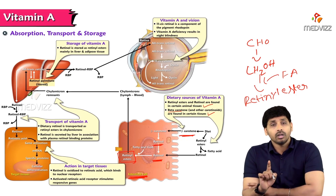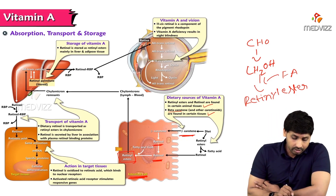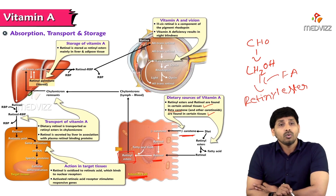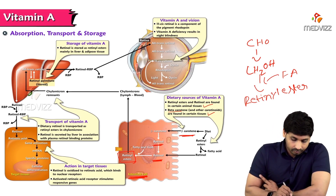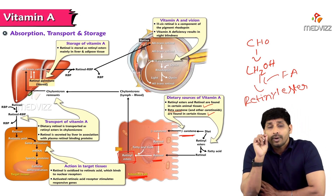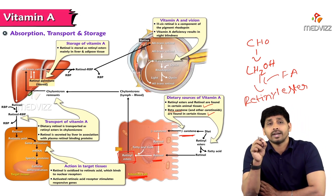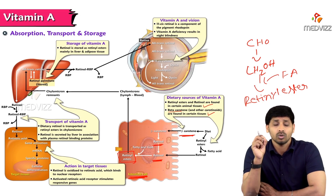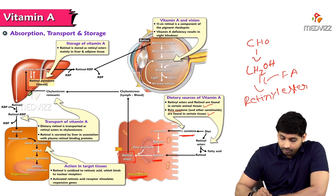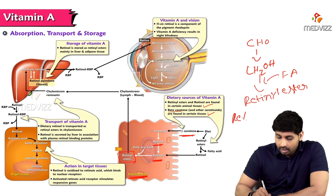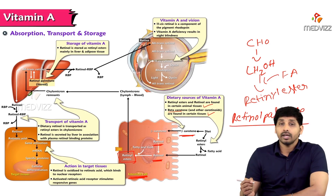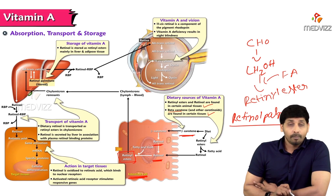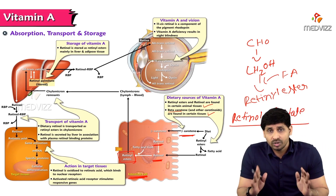In the liver, retinol esters are stored. The fatty acid mainly attached to retinol is palmitic acid, so vitamin A is mainly stored in the liver as retinol palmitate.